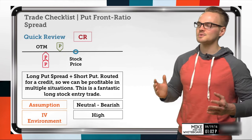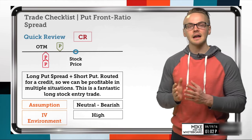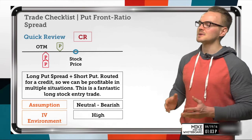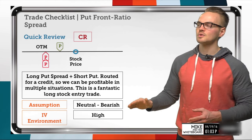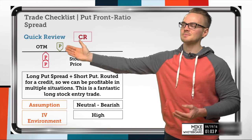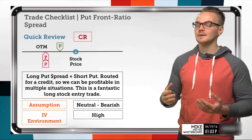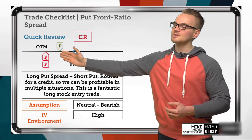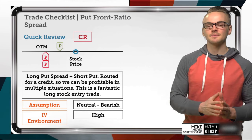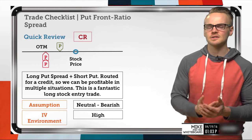Our assumption on this trade is neutral to bearish. If we're neutral and the stock doesn't move, all three options expire out of the money and worthless, allowing us to keep that initial credit as profit. But if the stock price goes down to our short strike, we realize maximum profit on this trade, which is why we have that bearish tendency — we'd place this strategy in an underlying where we think the stock will come down a little.